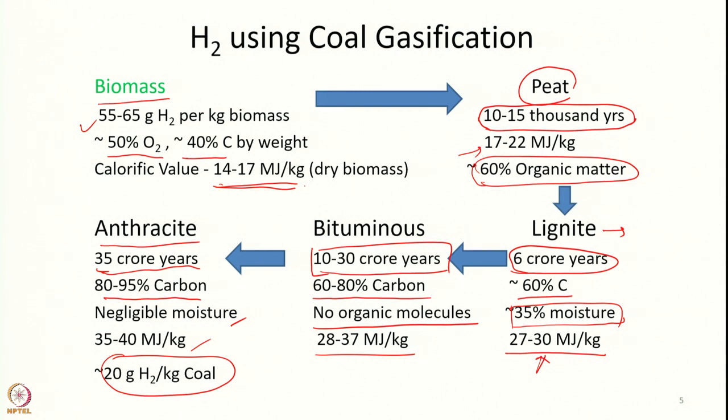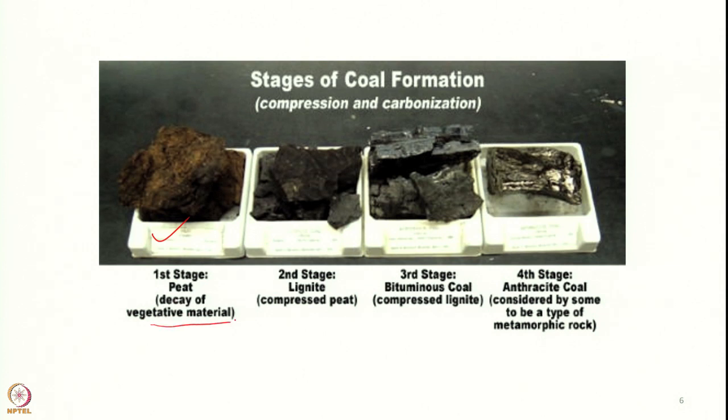That is the overall evolution of coal from biomass — that is why I kept these two together. Through a long duration and intense temperature and pressure inside the Earth's crust, biomass converted to different categories of coal over different timelines. Every type of coal has different hydrogen content, but anthracite and bituminous coal have very little hydrogen in them. In the literature you will see different definitions, but these high-carbon coals have very very low hydrogen content.